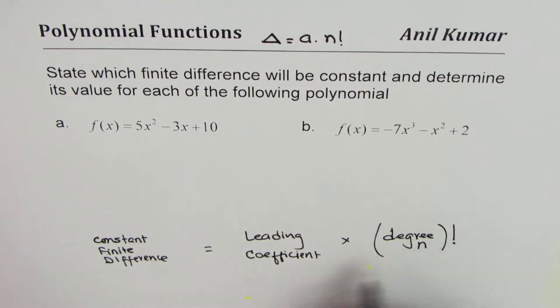Now what is the meaning of degree factorial, n factorial? The definition factorial is n factorial is n times n minus 1 times n minus 2, so on, times 2 times 1.